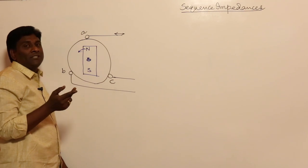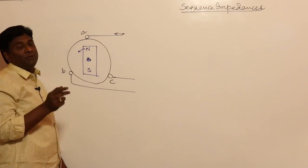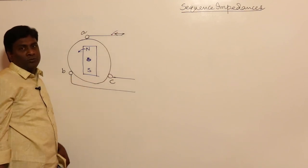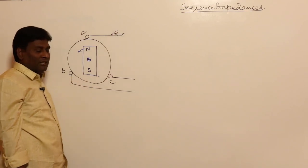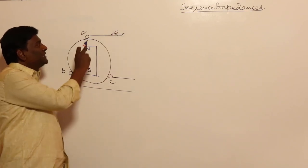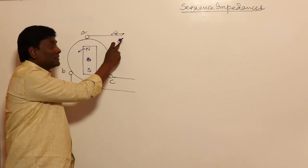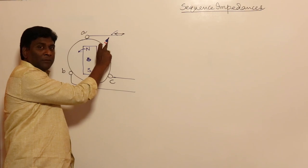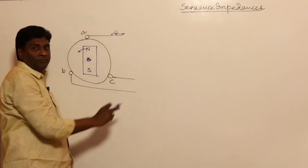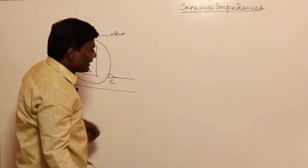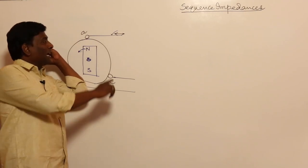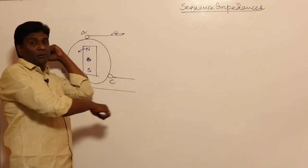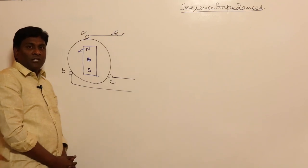Now if you think of negative sequence currents — what is negative sequence? It is A, C, B phase sequence. If negative sequence currents flow, the rotating magnetic field (RMF) created in the armature rotates in the opposite direction. So my rotor is rotating in one direction, but the RMF created because of negative sequence currents will be in the opposite direction.